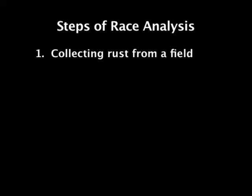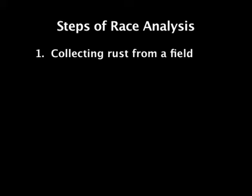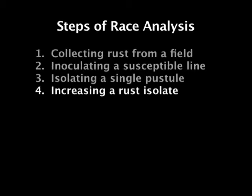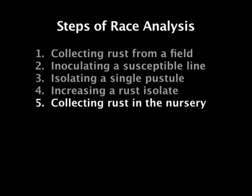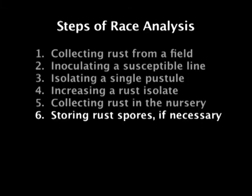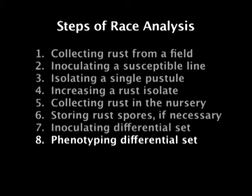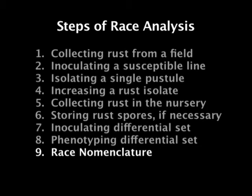In summary, this video describes the process of race analysis, including the following steps: collecting rust from a field, isolating a single pustule, increasing the rust isolate, collecting rust in a nursery, storing rust spores, inoculating plants, phenotyping differentials, and finally, race nomenclature.